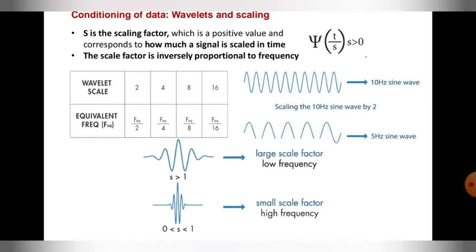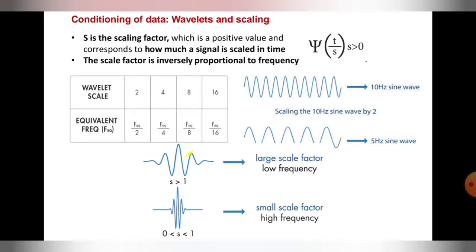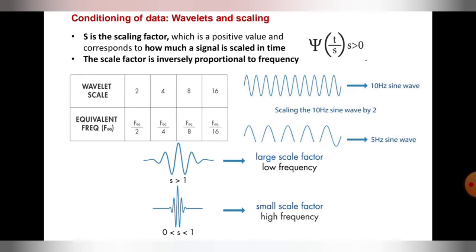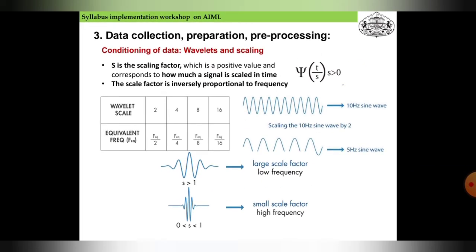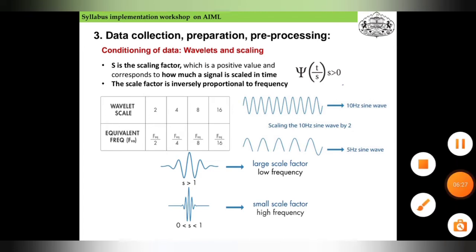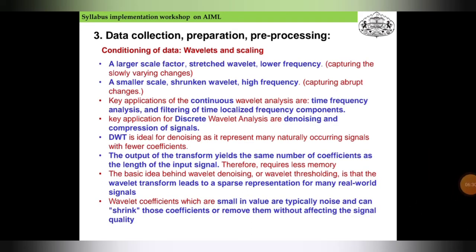So the larger scale factor with low frequency can give this kind of view and small scale factor with high frequency gives this kind of sine wave shown here. So conditioning of data means to prepare the data from raw format to usable format. This is how it works. A large scale factor stretches the wavelet, producing lower frequency.